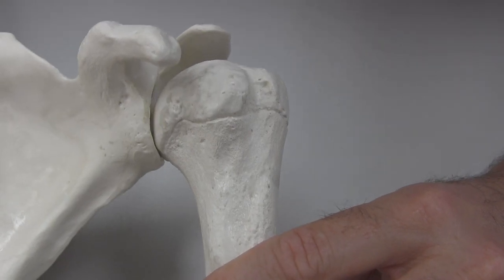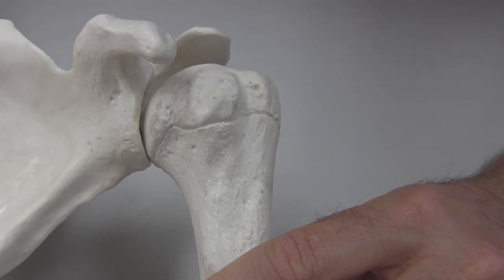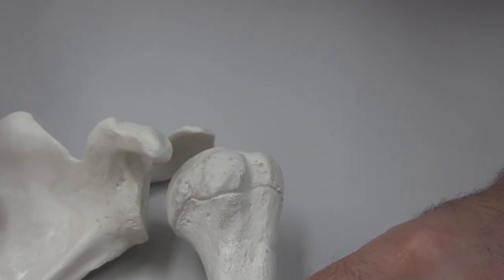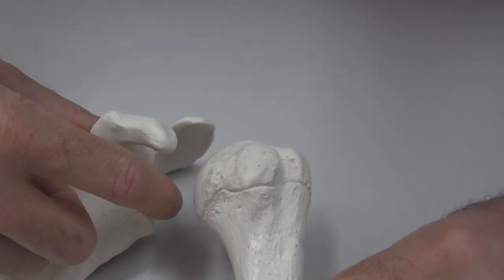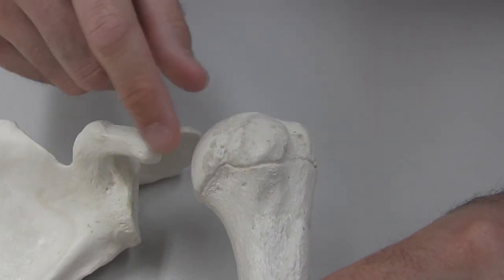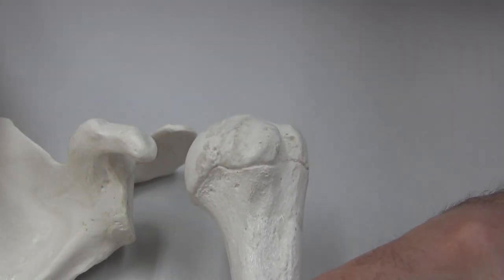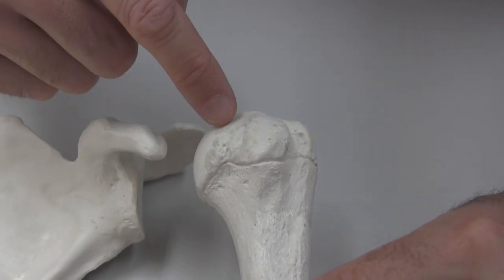Together, this is the shoulder joint, or more correctly known as the glenohumeral joint. The glenoid cavity and the humerus. So glenohumeral joint: glenoid cavity and humerus.